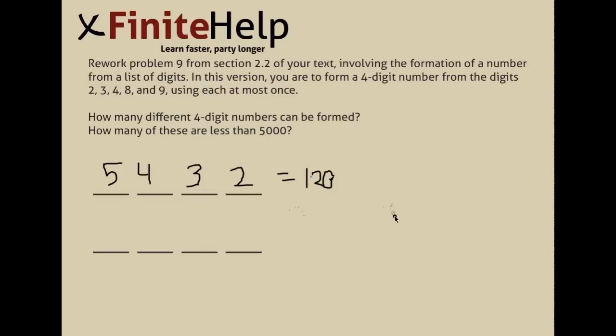So we have five numbers, 2, 3, 4, 8, 9, and we're trying to find the number of ways to list those numbers less than 5,000. So an example would be 4,983. Another example would be 2,348. And another example would be 3,489.